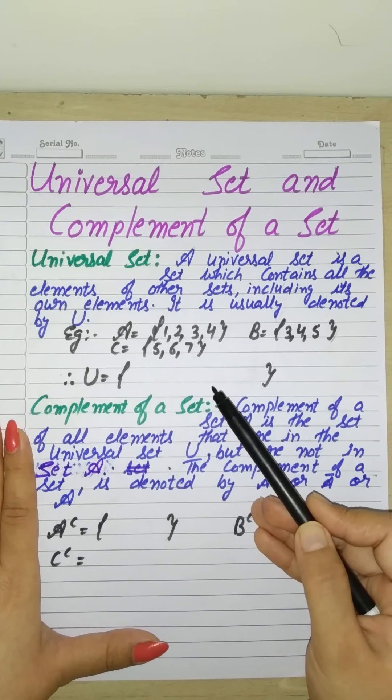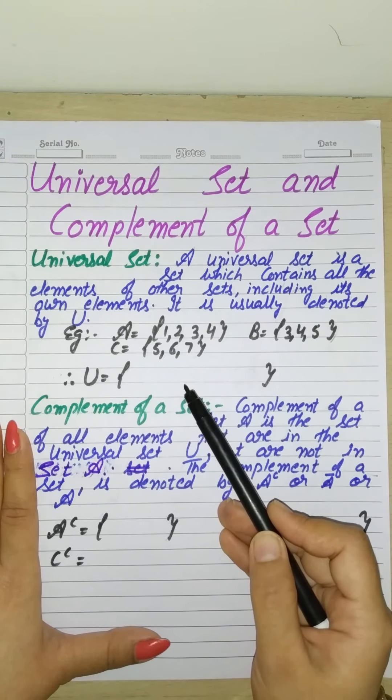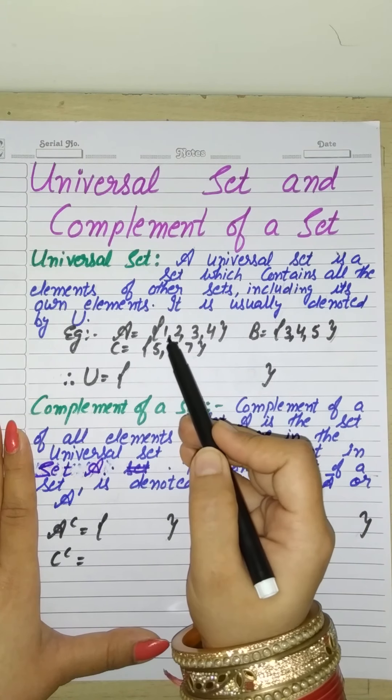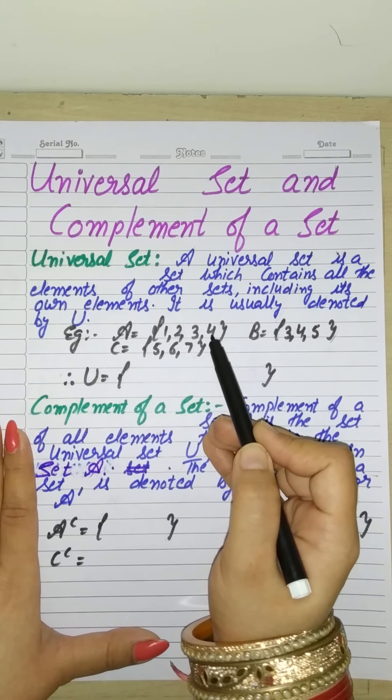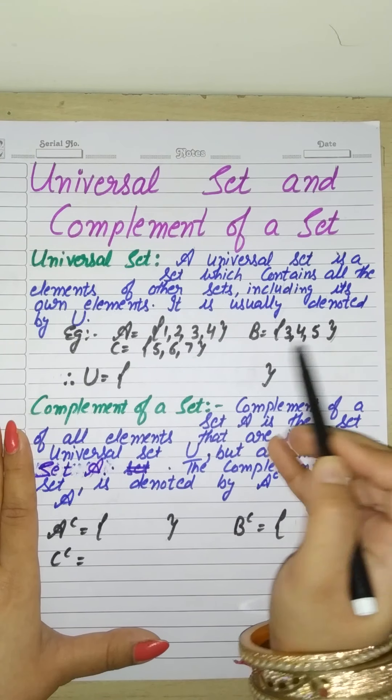According to the definition of universal set, what are all the elements? So now we will write 1, 2, 3, 4, elements of set A. Then we will write B: 3, 4, 5.